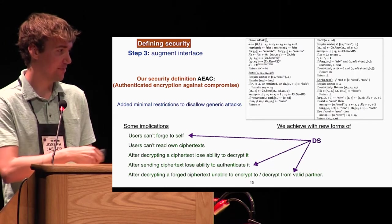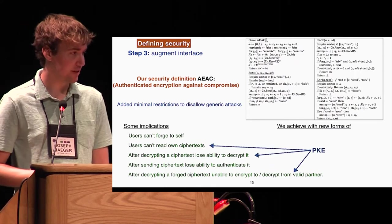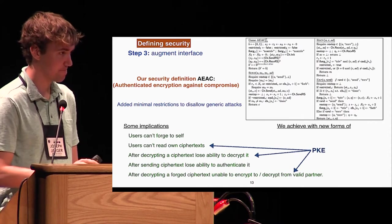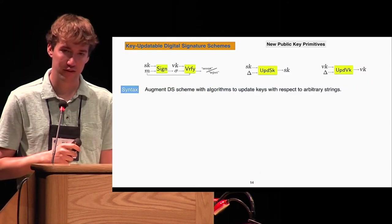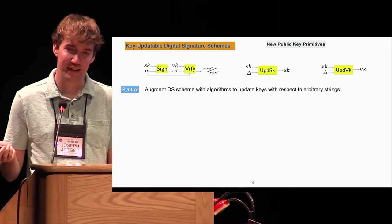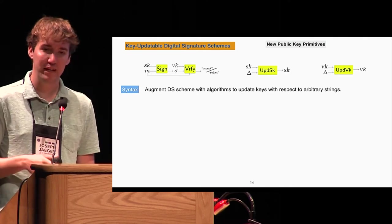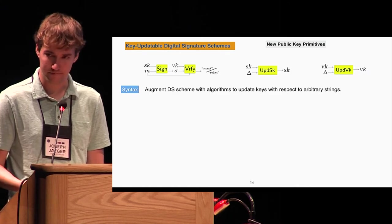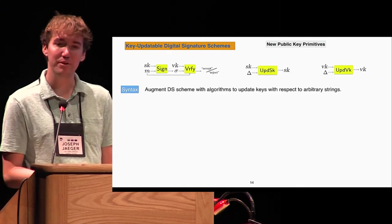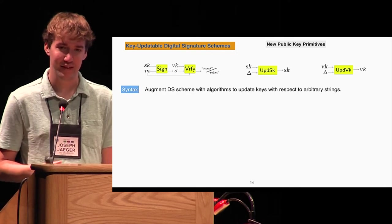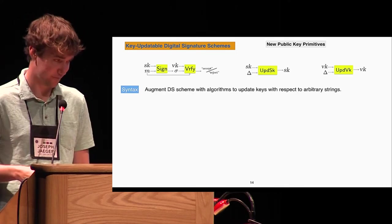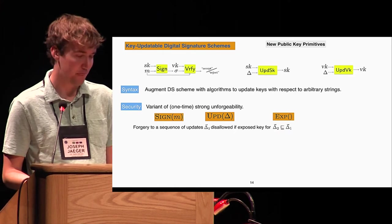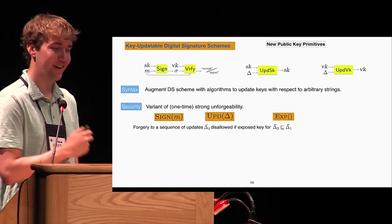Very roughly, these different implications are achieved with the new forms of digital signatures and public key encryption that we define. So let me talk briefly about those. First, key-updatable digital signatures. We start with our standard syntax of a signing and verification oracle, and then we add two algorithms for updating both of the keys with respect to some arbitrary string delta. How this update should work is that if two keys are updated with the same sequence of deltas, they should work together; otherwise the keys should no longer work with each other.